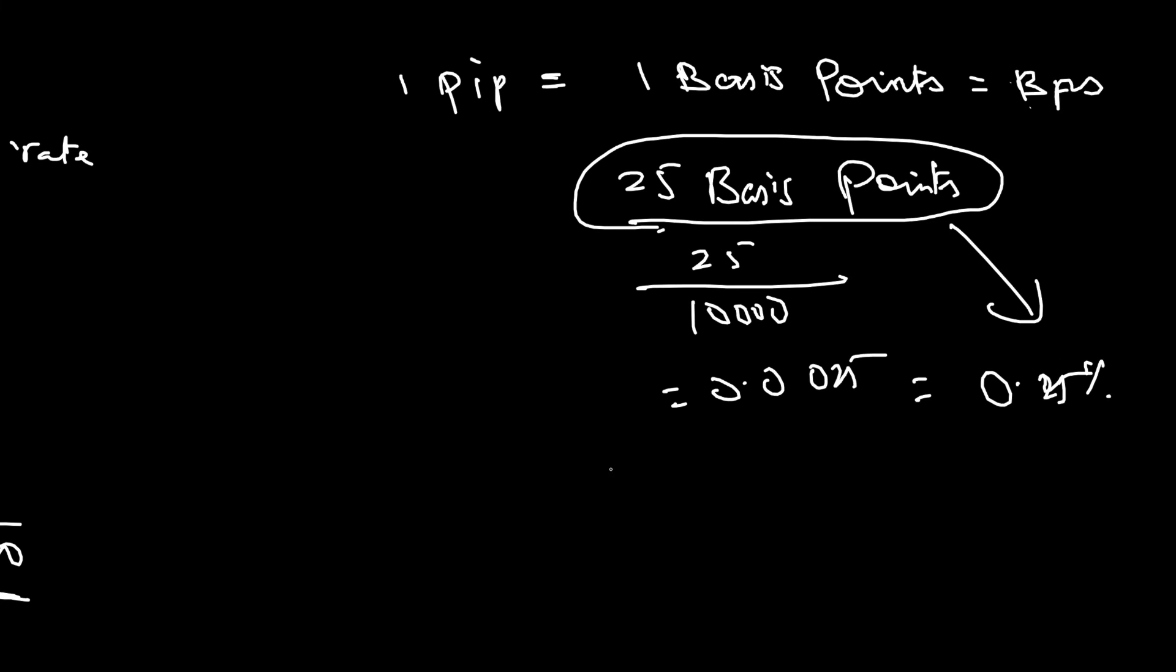Similarly, if I say 50 basis points. So, 50 basis points means what? 50 by 10,000. So, that is equal to 0.0050. That is equal to 0.5 percentage. So, this is 0.5 percentage.